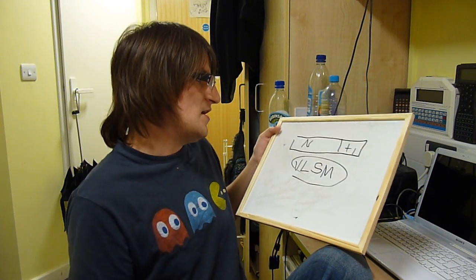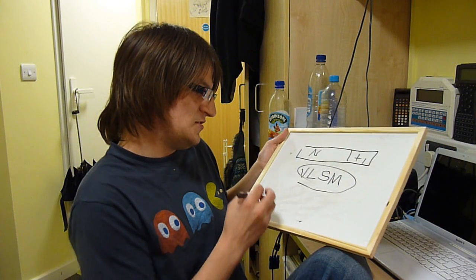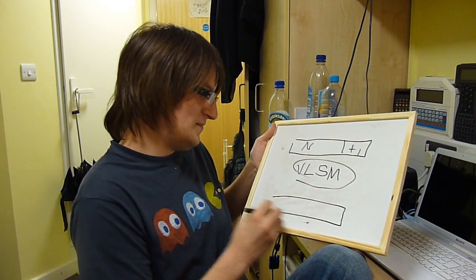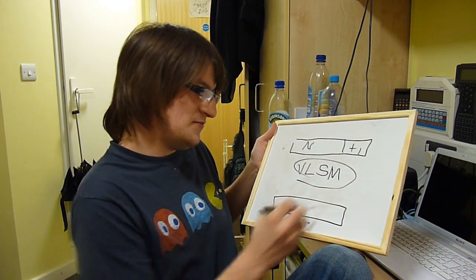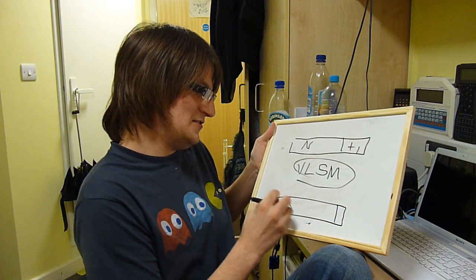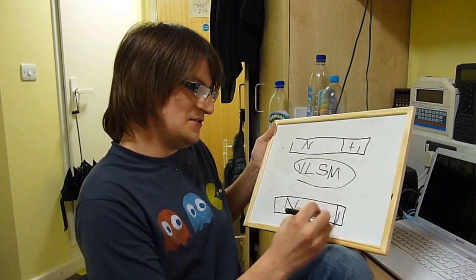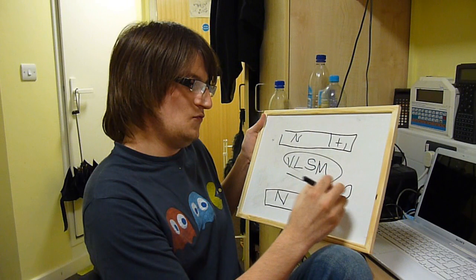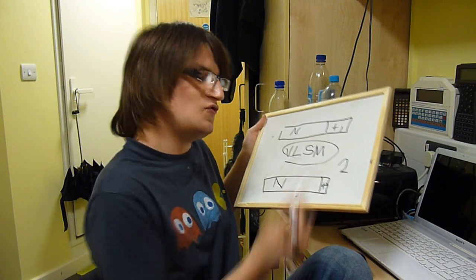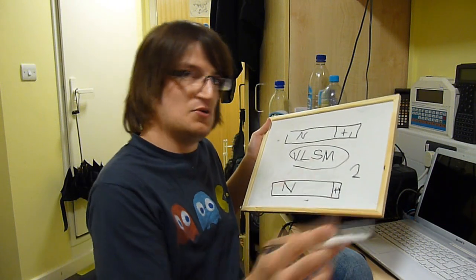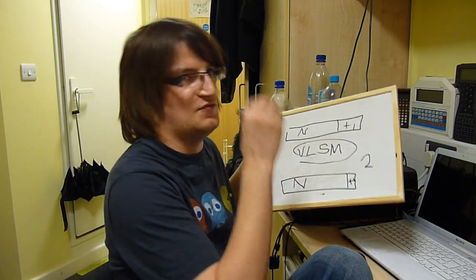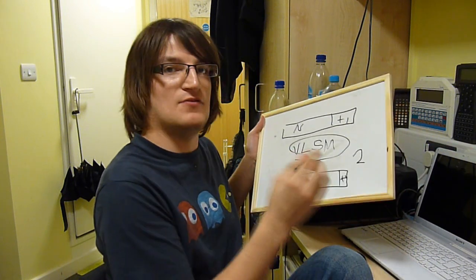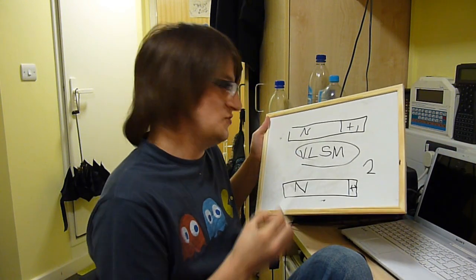This means that we can basically dedicate to our heart's content what our subnets are, so we can have a nice large network portion and a tiny host portion literally consisting of two hosts. This is useful for point-to-point links, aka one device linked to another, and is used on serial links on routers.